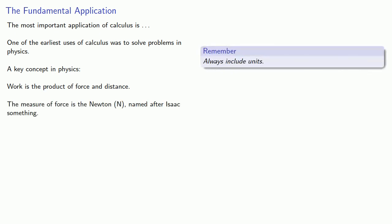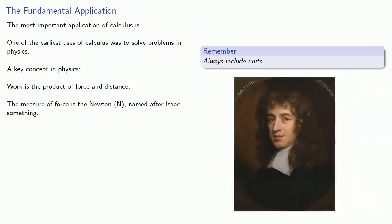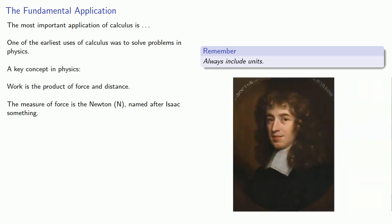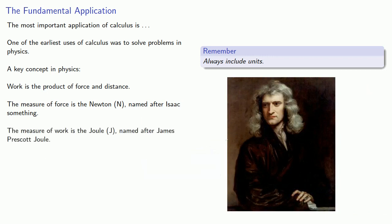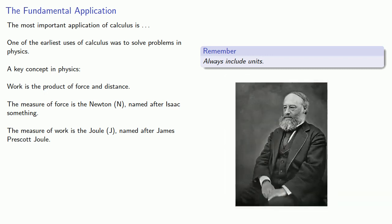The measure of force is known as the Newton, named after Isaac something. I forget the last name. Meanwhile the measure of work is the, well there's some debate over exactly how to pronounce it. The standard accepted pronunciation is Joule. However, like the Newton, it is a person's name, and there's some evidence that the person called himself James Prescott Jowell.